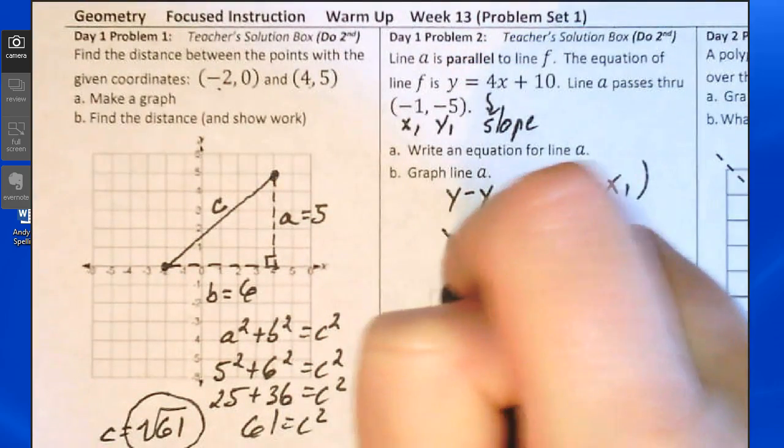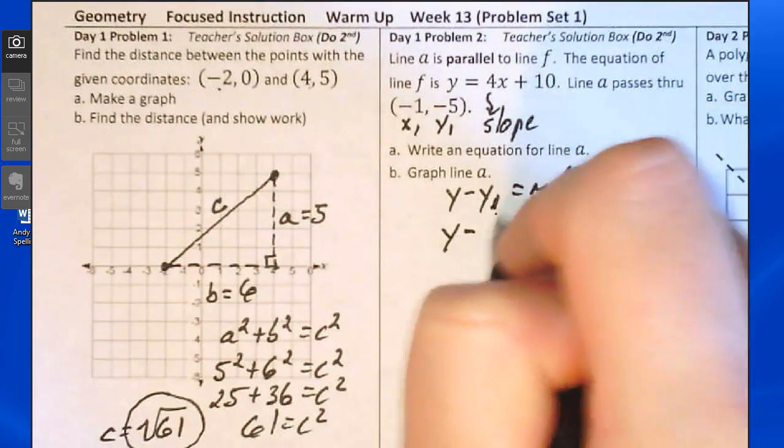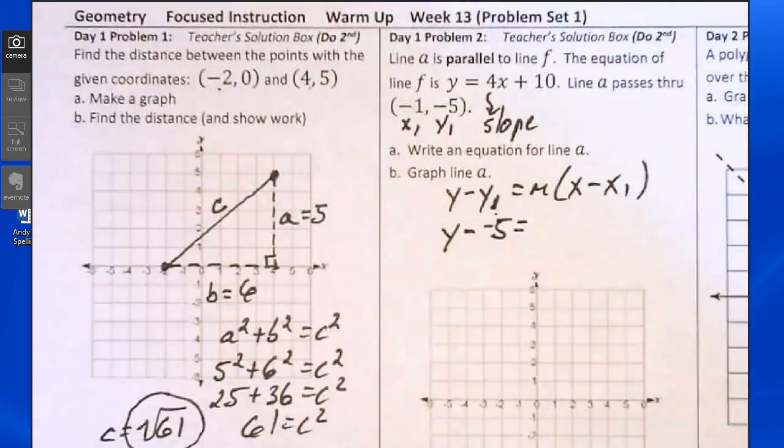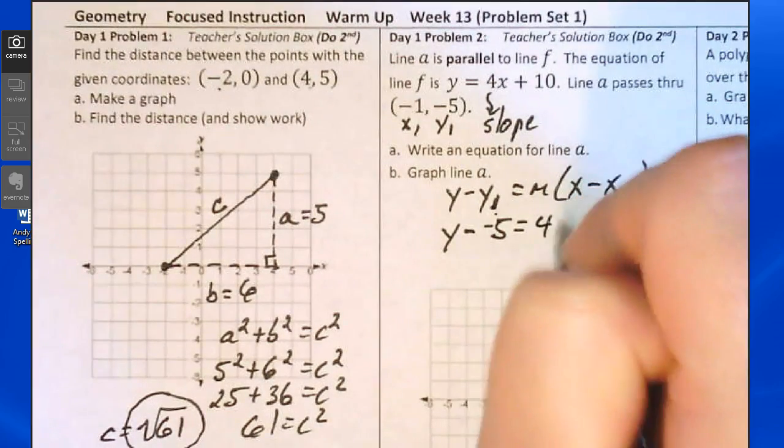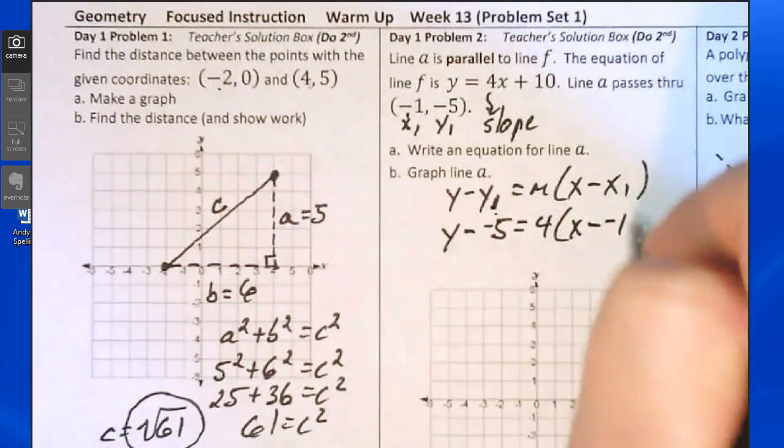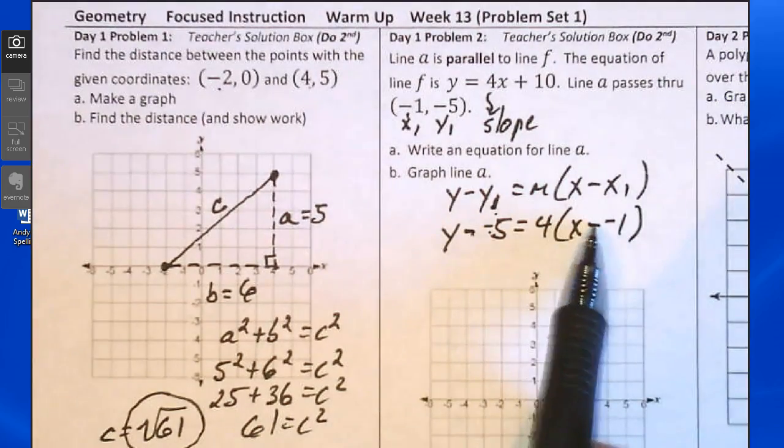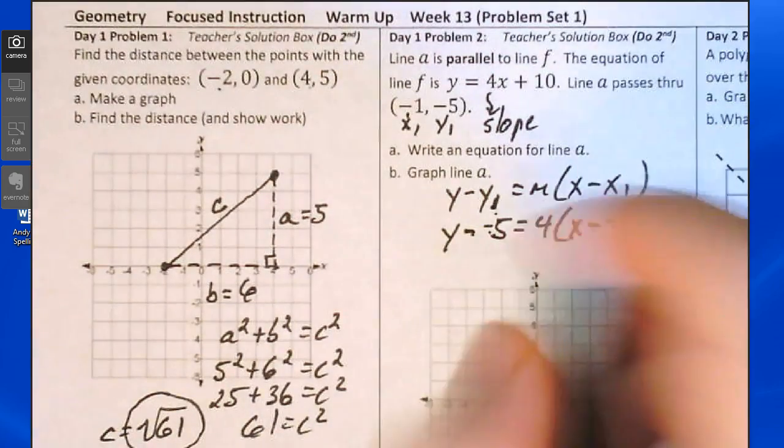So let's make the substitutions. For y1, fill in negative 5. For m, fill in the slope, which is 4. For x1, fill in negative 1. This would be the answer except for these double negative places. We need to fix those.